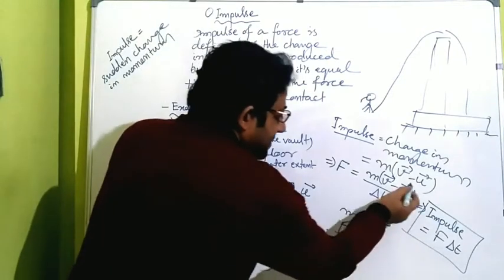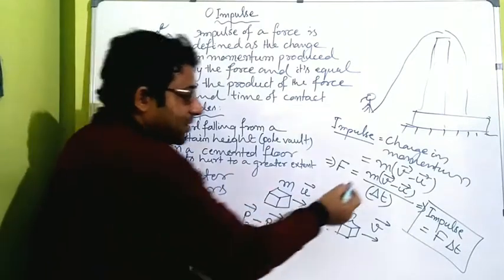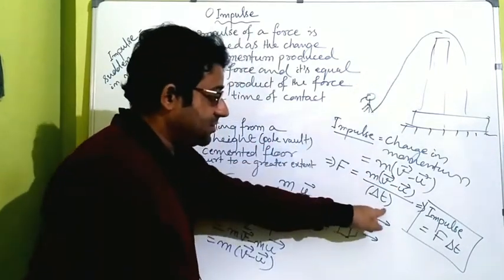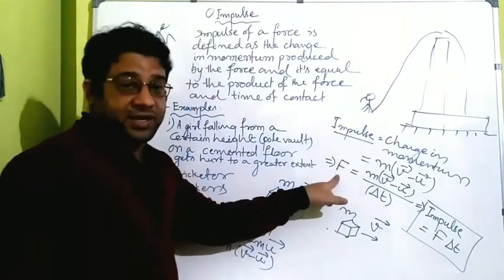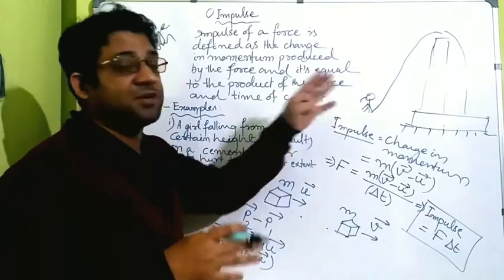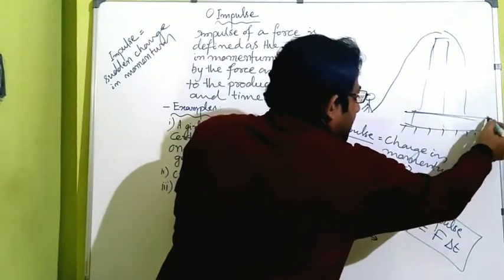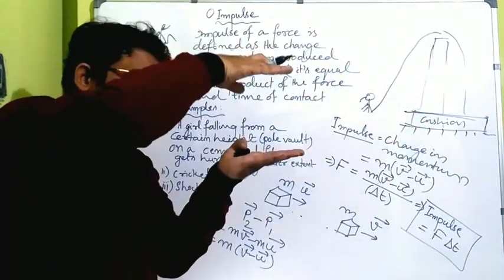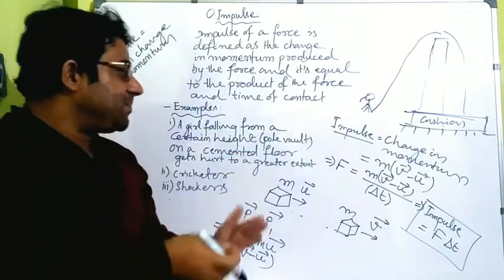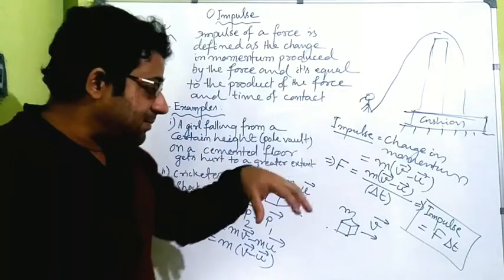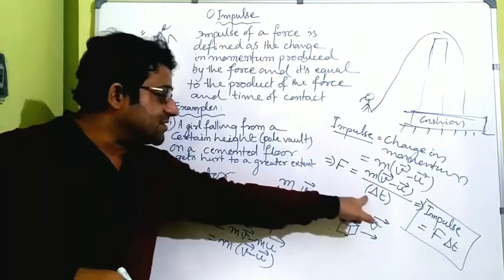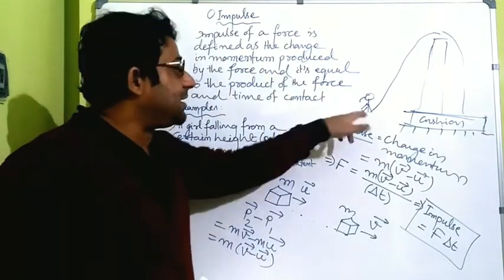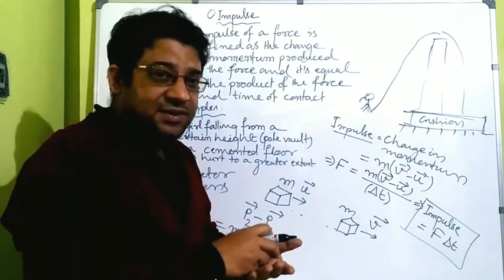This change in velocity is happening suddenly, so delta t is very very tiny. In the formula, delta t is in the denominator, so if delta t is small, the force is very high — the person will be hurt. Instead, if a cushion is provided, the person comes in contact with the cushion, which compresses, increasing the time of contact. This delta t increases, and since it is in the denominator, the force decreases — that's why the person gets less hurt.